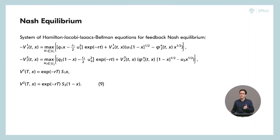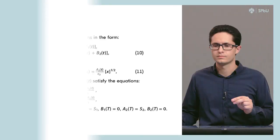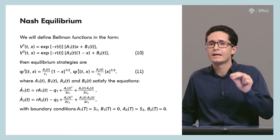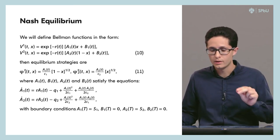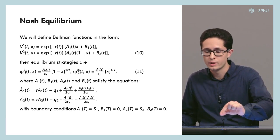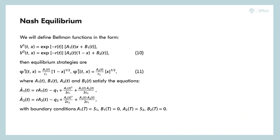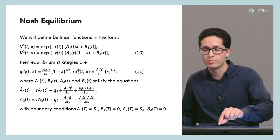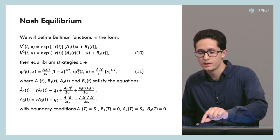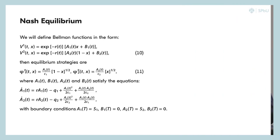How can we solve the system of Bellman equations for the advertising cost model? On the slide you can see a system of two equations, one for each player. We solve it by guessing the form of the Bellman function. We try the form: v1(t,x) = e^{-rt} [a1(t)·x + b1(t)] and v2(t,x) = e^{-rt} [a2(t)·(1-x) + b2(t)]. We can then define the strategies corresponding to the Nash equilibrium, which depend on the unknown functions a1(t) and a2(t).